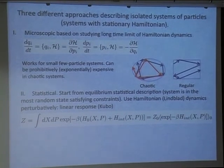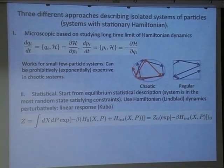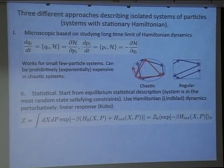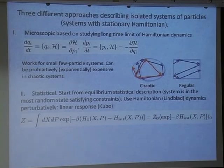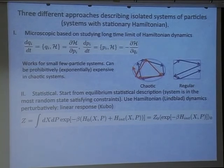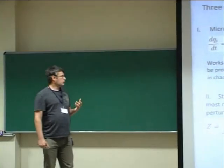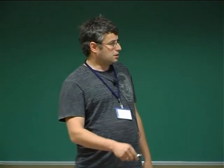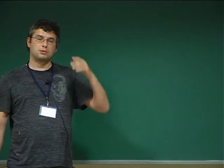There is another approach: just standard statistical physics. We say we have some partition function which gives us a microscopic probability distribution. After that, we use Hamiltonian dynamics perturbatively — using perturbation theory around the partition function we can make many predictions. In particular, all linear-response quantities like conductivity, susceptibility, and fluctuation-dissipation relations have been derived in this framework.